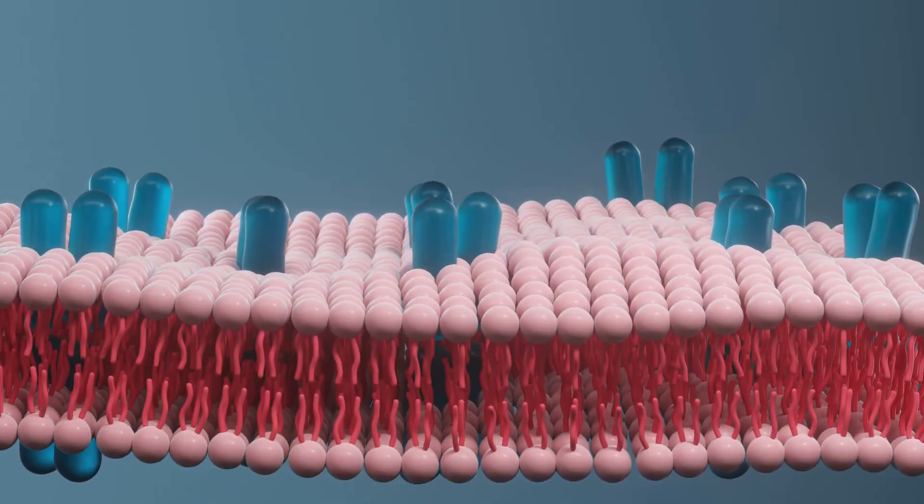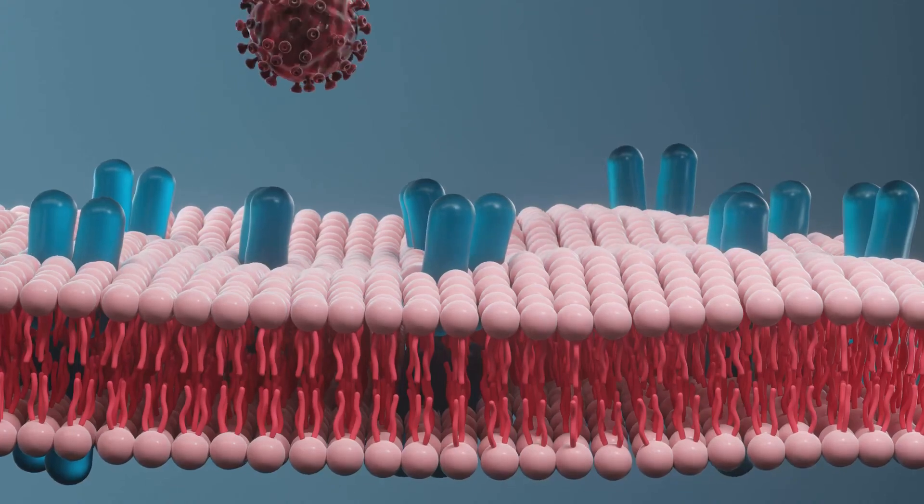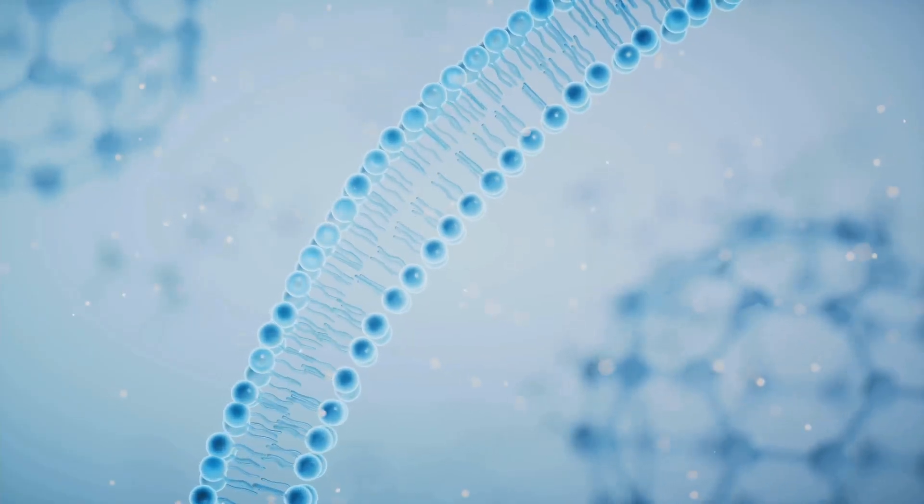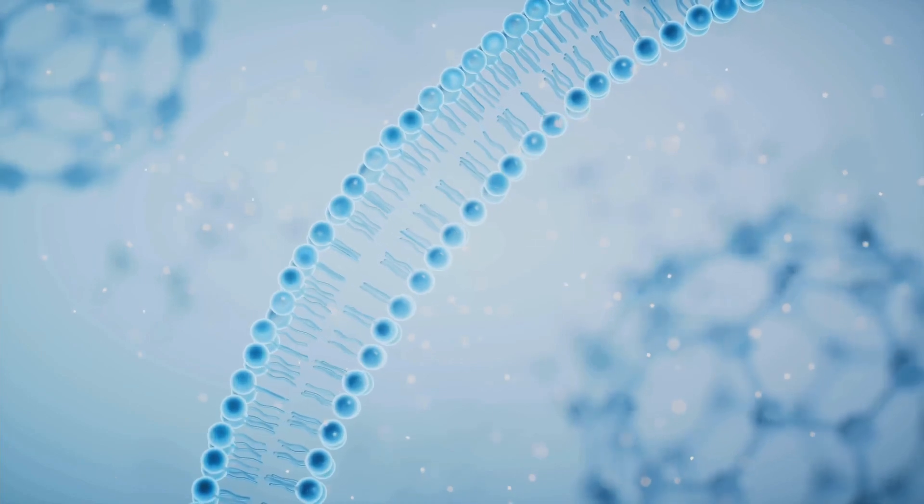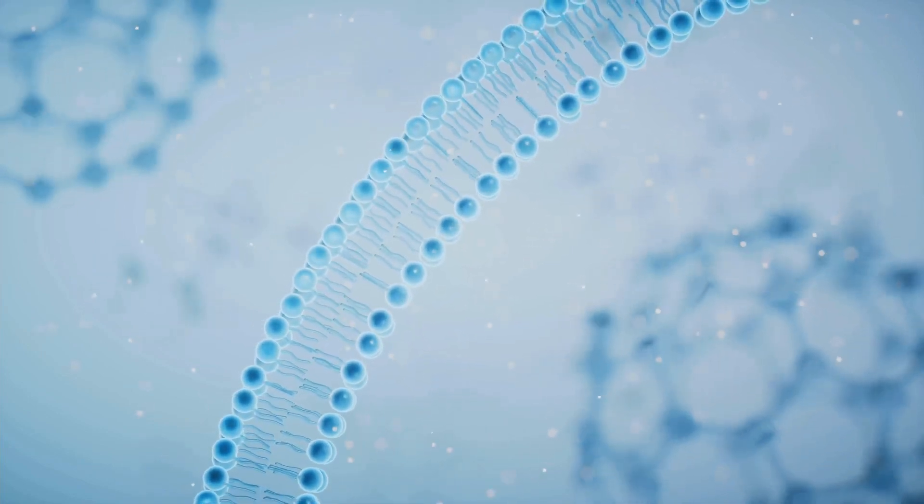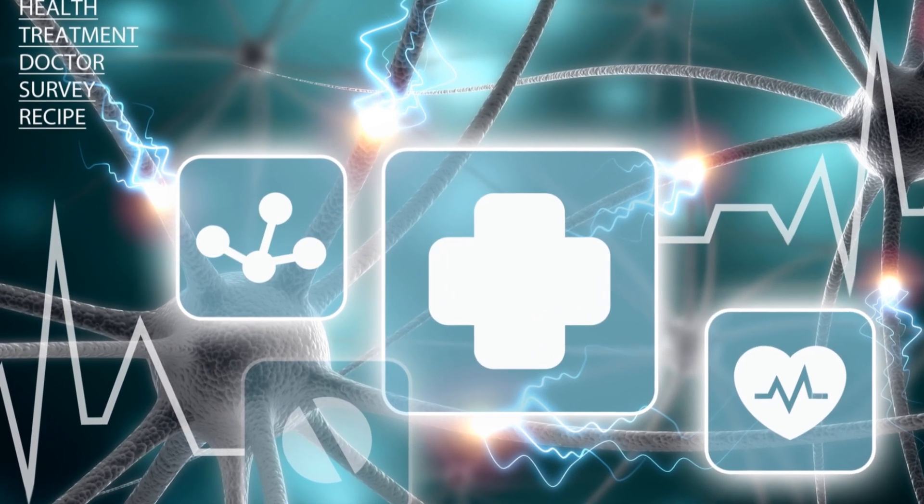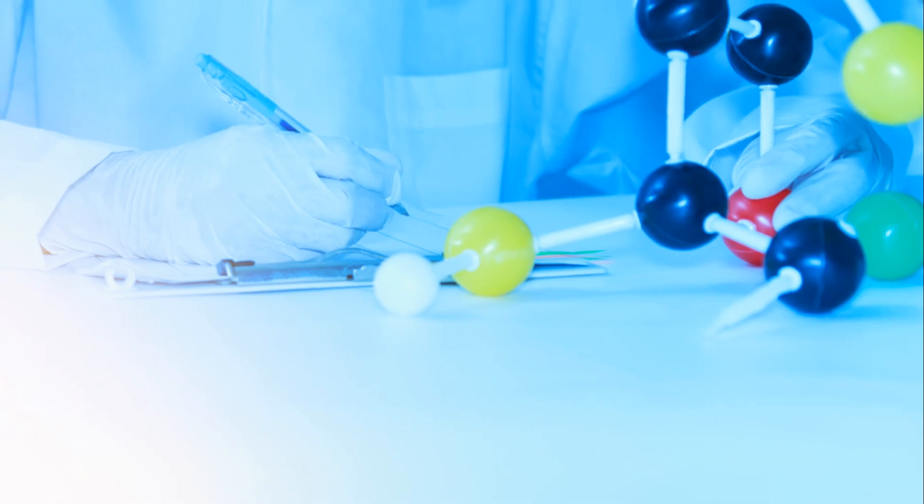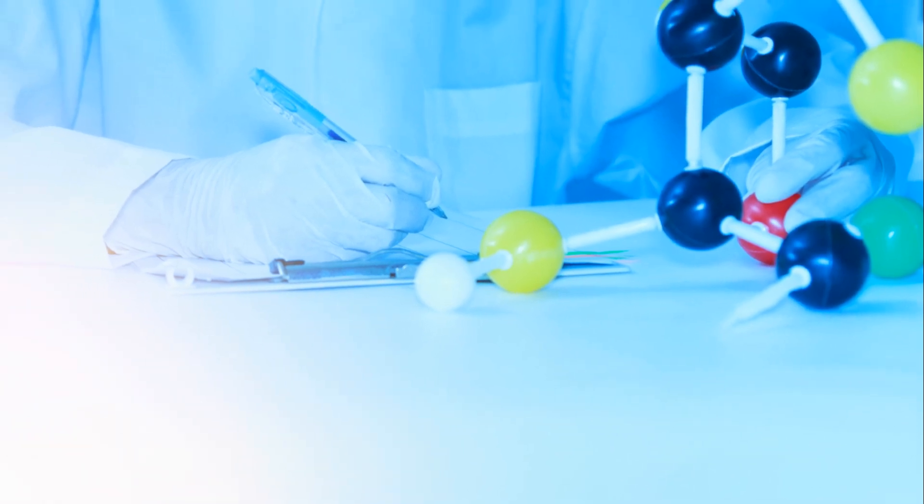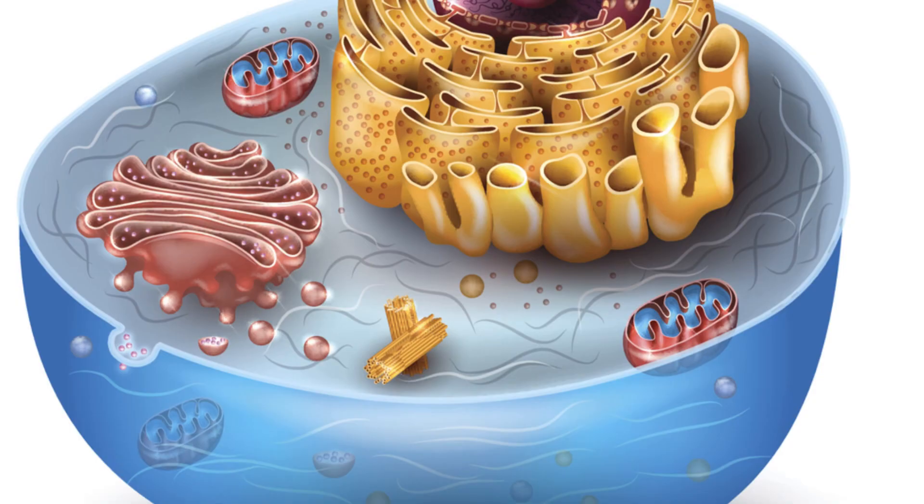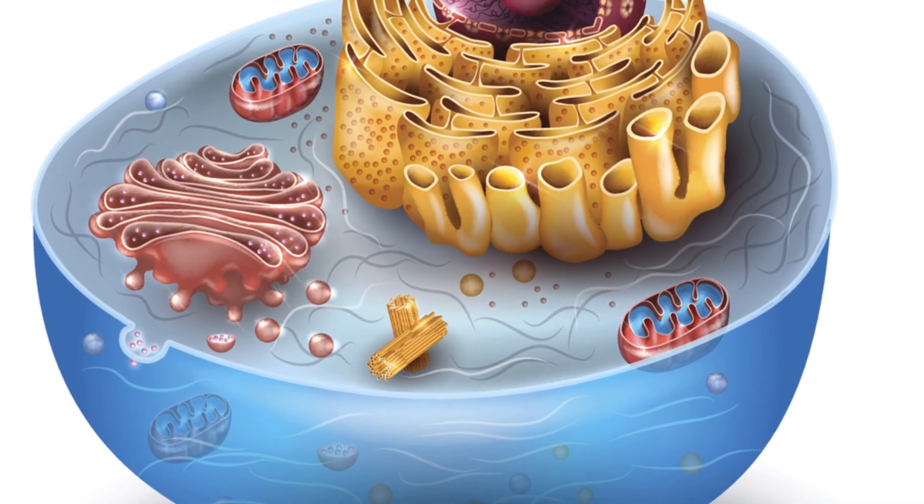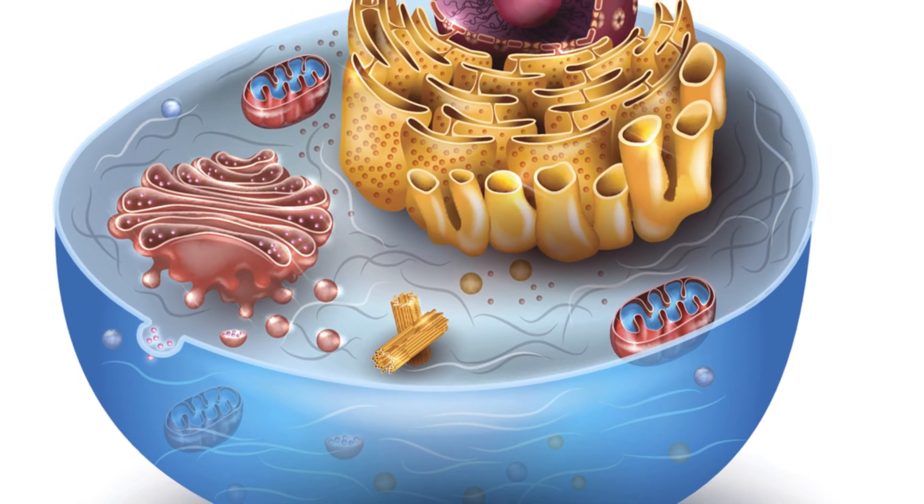The ER, we now know, is like the manufacturing and processing center of the cell. It's involved in a dizzying array of tasks, from producing the proteins that make up our bodies to synthesizing the lipids that form our cell membranes. It's also involved in regulating calcium levels, folding proteins into their correct shapes, and even dispatching molecules to their correct locations within the cell. Without the ER, life as we know it simply wouldn't exist. It's a testament to the intricate complexity of life that exists even at the smallest scales, and its discovery marked a turning point in our understanding of the hidden universe within each of our cells.